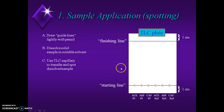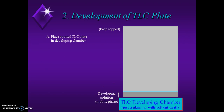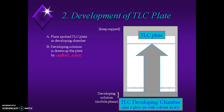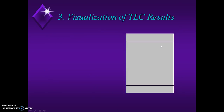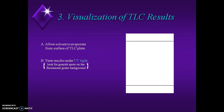When you get the TLC plate, draw a starting line one cm from the bottom and a finishing line one cm from the top of the plate. Sample spots are applied with the help of a capillary. Then prepare the mobile phase, put it into the suitable chamber, allow the chamber to saturate, and then dip the plate. The solvent will move upward due to capillary action. When the solvent front reaches the finishing line, remove the plate and allow it to dry.